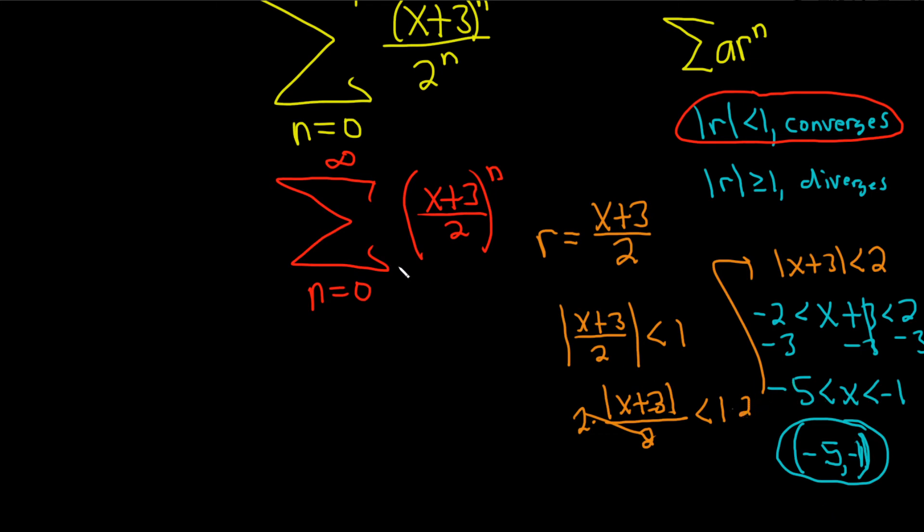Okay, to find the sum, all you do is you take whatever number is here and you plug it in. So we would get ((x+3)/2)^0. So take whatever is here and plug it in, and then you just divide by 1-r.